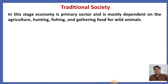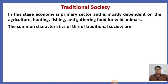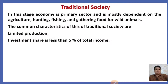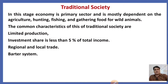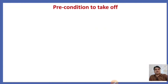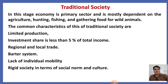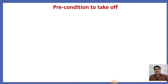The first stage is traditional society. In this stage, the economy is primary sector-based and mostly dependent on agriculture, hunting, and fishing, with people engaged in gathering food. Common characteristics include limited production, investment share less than five percent of national income, regional and local trade only, a barter system, lack of individual mobility, and a rigid society in terms of social norms and culture.